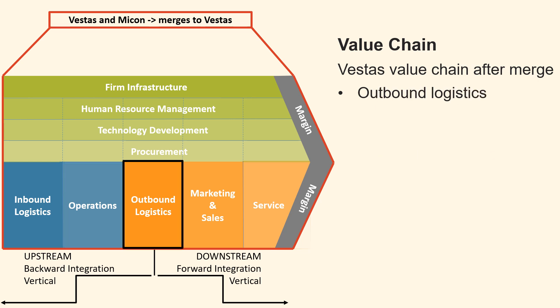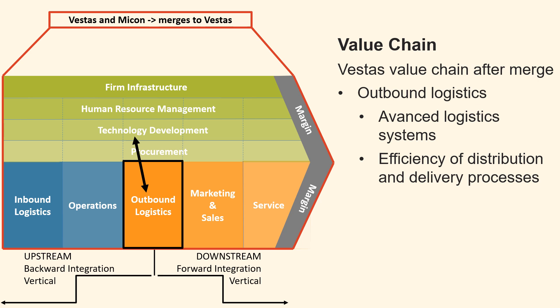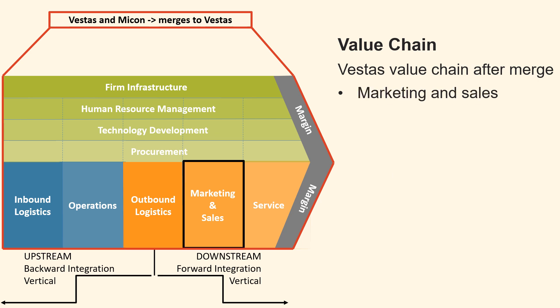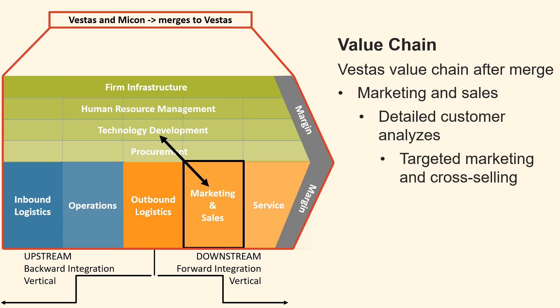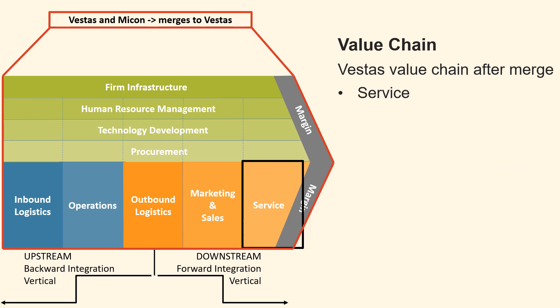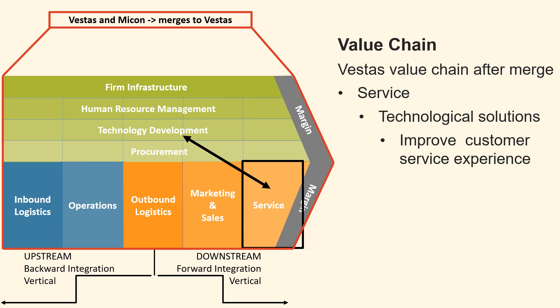The third primary activity is outbound logistics: the advanced logistics system developed by the company's technology department enhances the efficiency of distribution and delivery processes. The fourth primary activity is marketing and sales: detailed customer analysis conducted by the marketing and sales team, with help from the technology department, can enhance targeted marketing and cross-selling. The fifth primary activity is service: technological solutions such as chatbots or automated support systems can improve the customer service experience.